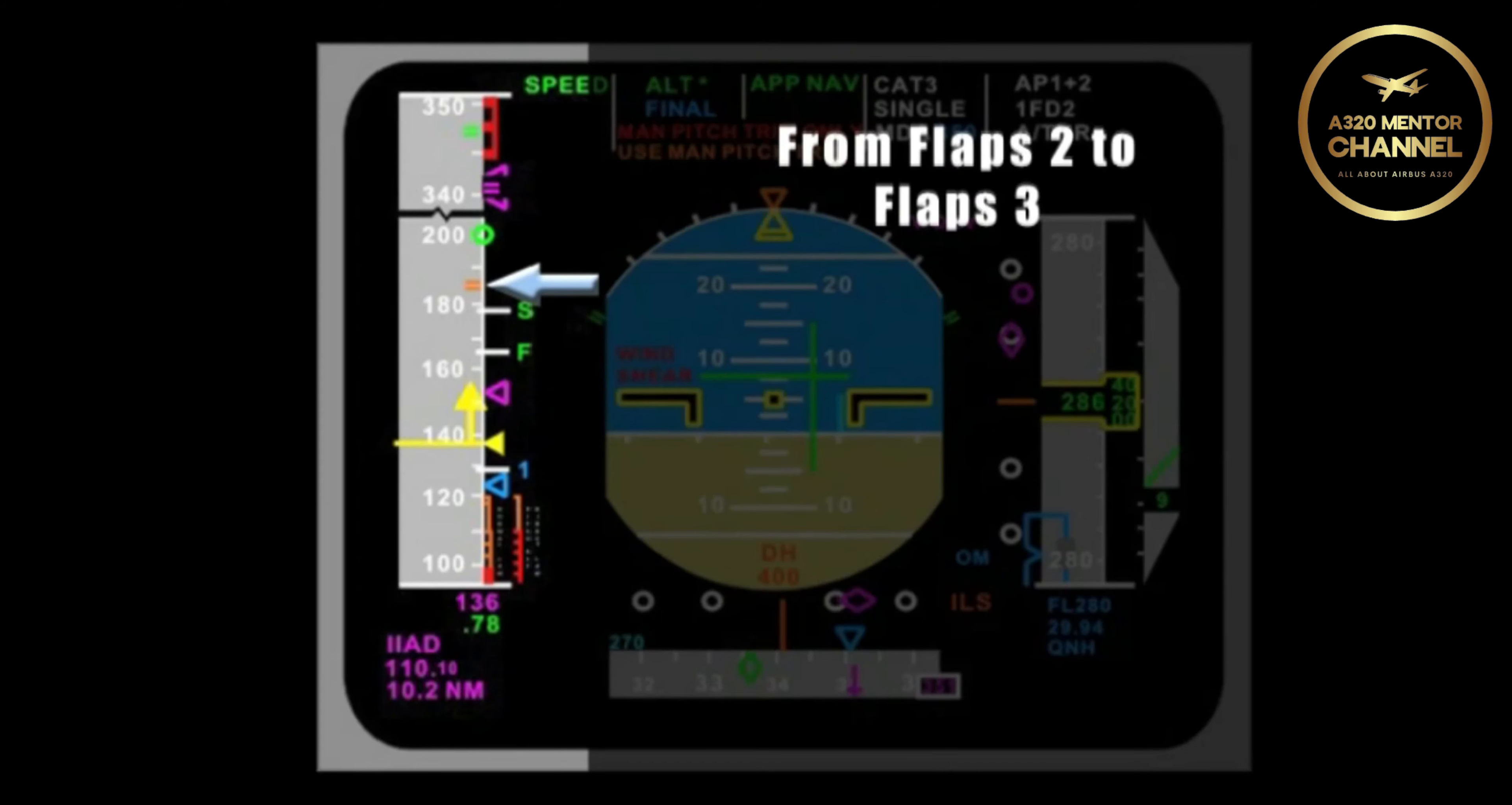As you continue your approach, you move from flaps position 2 to position 3. To what speed will the amber tick marks move to? And what will happen to VMAX? The amber tick marks will move to 177, because the next flap setting is flaps full. That speed is 177. VMAX will then move down to 185 knots.